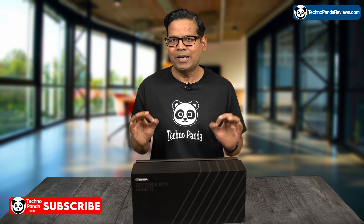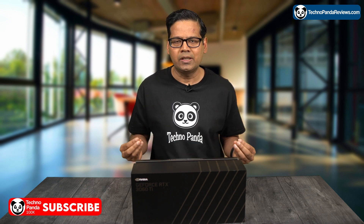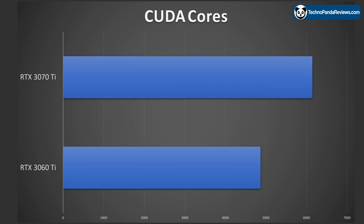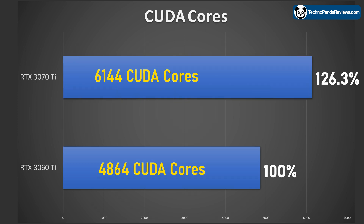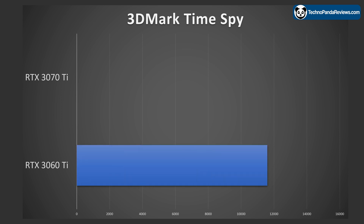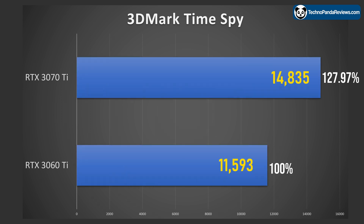You guys might be wondering, what do CUDA cores have to do with anything? The typical performance of an Nvidia GPU is proportional to the number of CUDA cores that it has. To give an example, let's take a look at this chart, which compares the number of CUDA cores in the RTX 3070 Ti versus the RTX 3060 Ti. The RTX 3070 Ti has 26.3% more CUDA cores than the RTX 3060 Ti, and it outperforms the RTX 3060 Ti by roughly the same amount in synthetic benchmarks. In fact, in the 3DMark Time Spy benchmark, the RTX 3070 Ti is 27.97% faster than the RTX 3060 Ti.